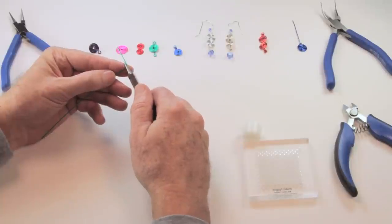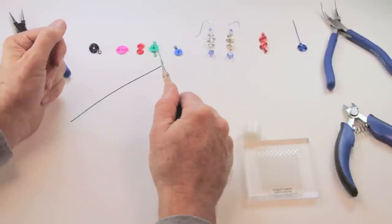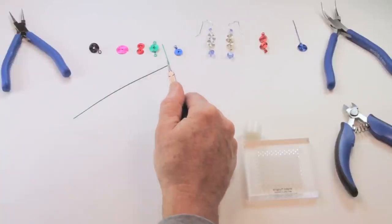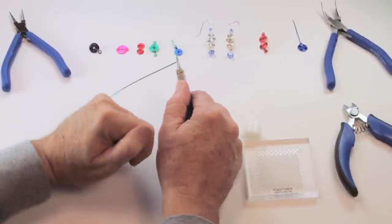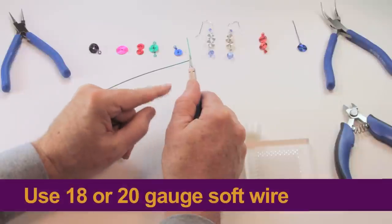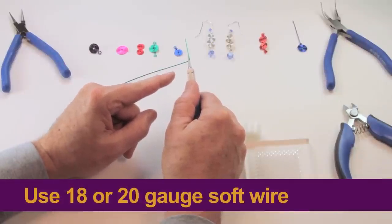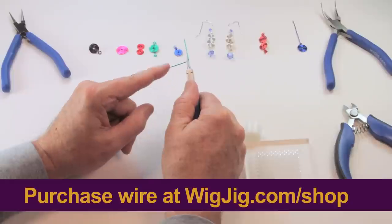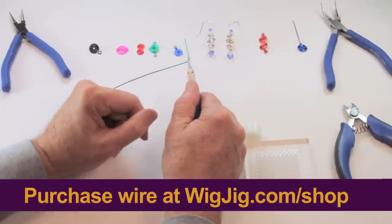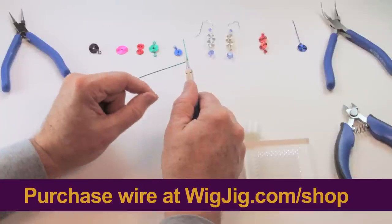And I want to ask a question about the wire. Shouldn't it be, it shouldn't be half-hard consistency, should it? That's a good point. In order to make a spiral, the wire that you want to use is 18 gauge or 20 gauge. And it needs to be soft wire. If it's half-hard wire, it won't make a good spiral because it'll spring open and leave gaps. And so you want soft wire and 18 gauge or 20 gauge.